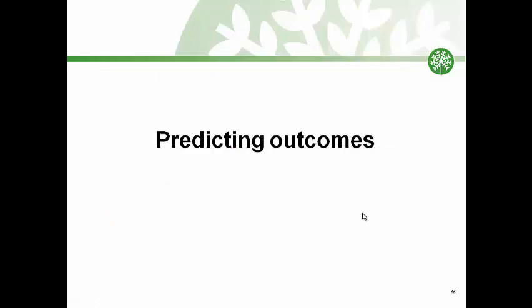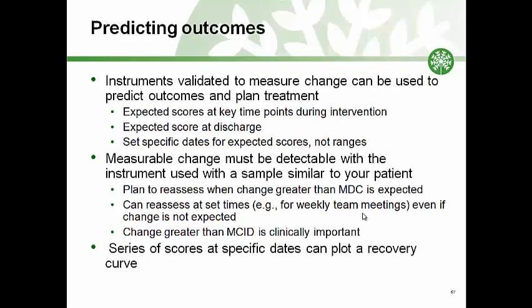Our final topic in this module is predicting outcomes. The same instruments we use to monitor change can also be used to predict change. Doing so requires that we have accumulated assessments for many patients and can analyze them statistically, or we can use published studies with similar patients. We want to make sure we select articles reporting outcomes for patients similar to ours, as results from different samples may not generalize. Measureable change must be detectable with the instrument used. Change greater than the MDC is detectable, and change greater than the MCID is clinically important. You can plot scores over time to monitor or illustrate the trajectory of recovery.